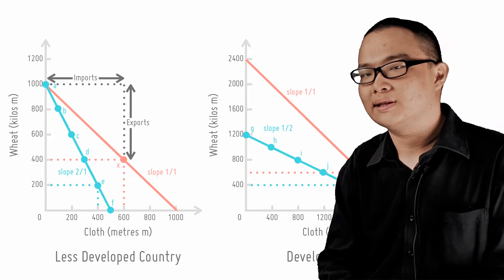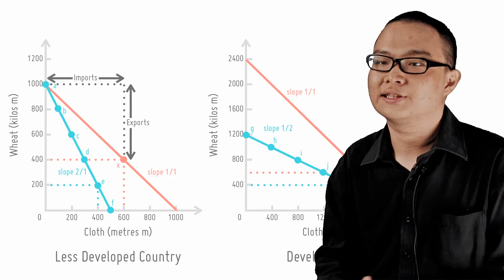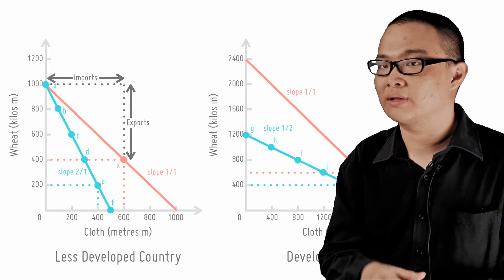We have shown in the previous lecture that trade based on comparative advantage can actually lead to increases in the world's output.